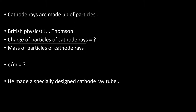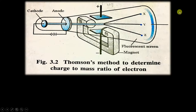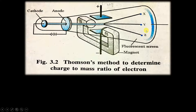Let's understand what this cathode ray tube looks like and what helped Sir J.J. Thomson find that value. This cathode ray tube is similar to a discharge tube — it has a negatively charged plate called the cathode and a positively charged plate called the anode. There is a hole in the anode for cathode rays to pass through and hit the screen, creating fluorescence.